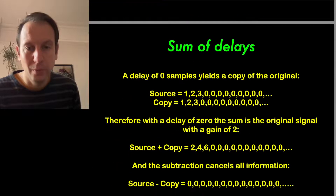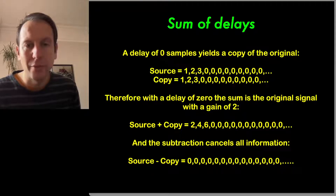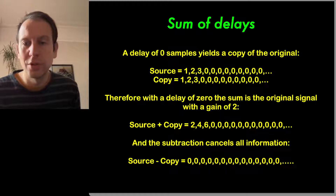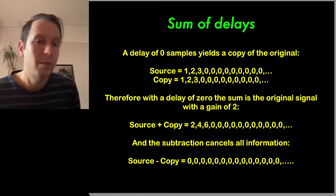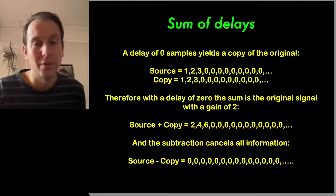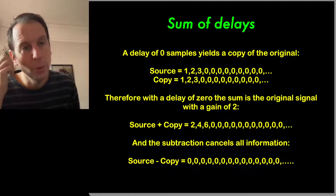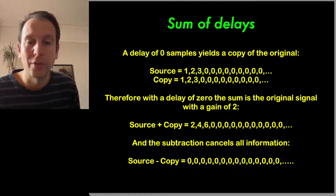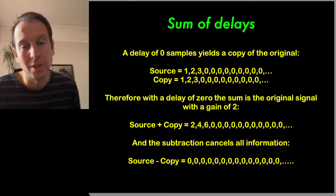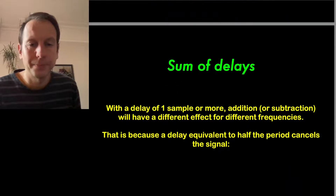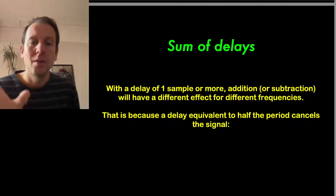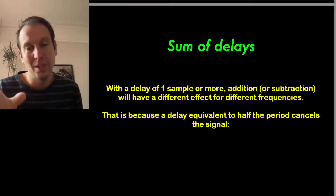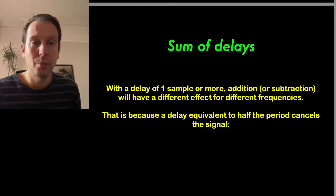If we sum without delay, we double the amplitude — otherwise called constructive interference. Then if we subtract the copy from the source, we cancel out all the values to zero — this is destructive interference. So if I add a signal with an inverted version of the same signal, in other words subtract the signal from itself, there is nothing left. Without any delay, we can either double the amplitude or totally remove the signal.